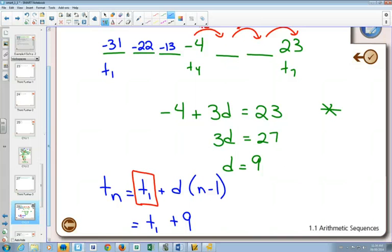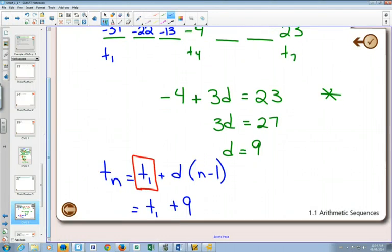Usually avoiding negative numbers, because if you're going to make some mistakes, usually with a negative number your chances of making a mistake are greater. So I know term seven is 23.